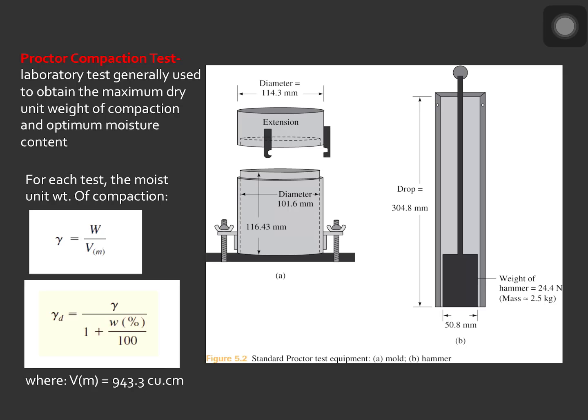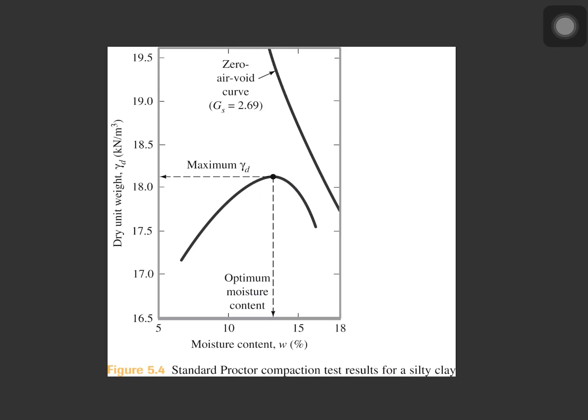For each test, the moisture content of the compacted soil is determined in the laboratory. With the known moisture content, the dry unit weight can be calculated as dry unit weight equal to moist unit weight over 1 plus moisture content. The values of the dry unit weight determined from the previous equation can be plotted against the corresponding moisture content to obtain the maximum dry unit weight and optimum moisture content for the soil.